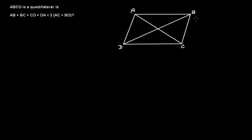Again, we have a quadrilateral ABCD, and in this case you have to tell whether AB plus BC plus CD plus DA is less than 2 times of AC plus BD.